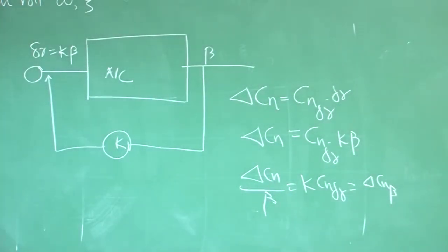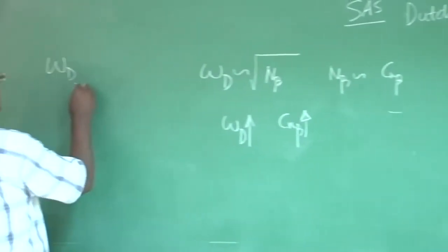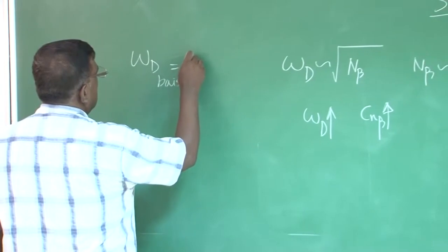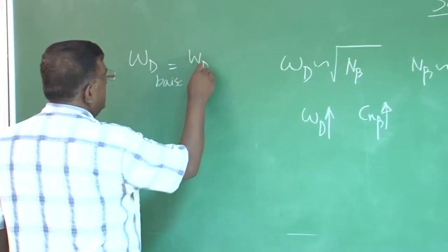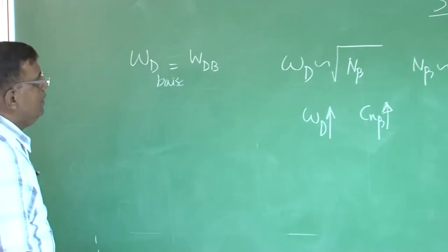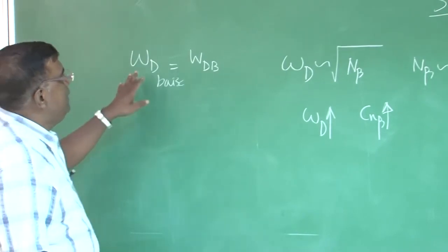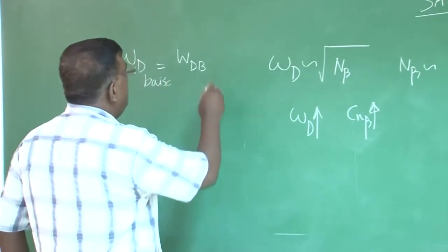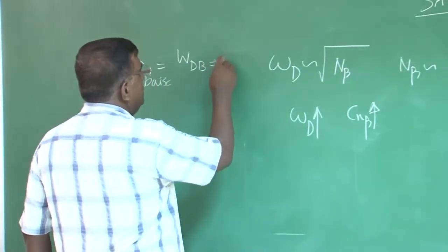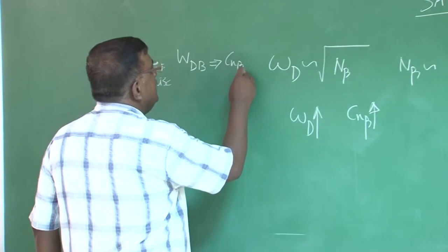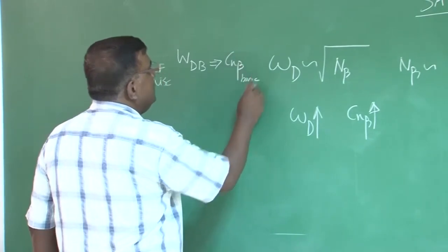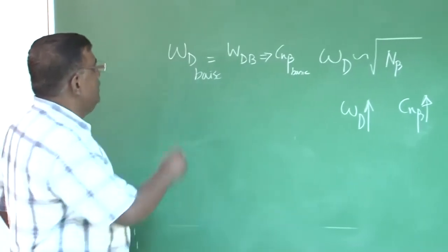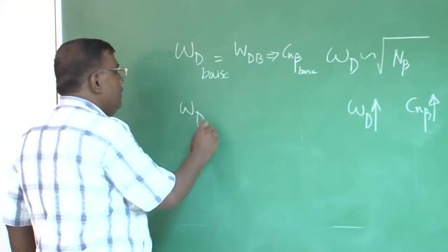So, let us come back again here. Suppose, I have got dutch roll frequency basic, I had let us say w d b and say basic. Now, with this basic, whatever the airplane has, we found the corresponding c n beta over c n beta basic.